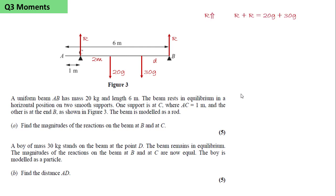We resolve vertically. R plus R will equal 20g plus 30g. So that the reaction at both C and B will be 25g.